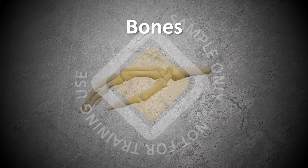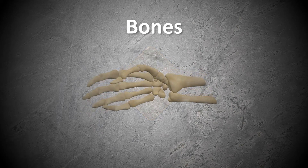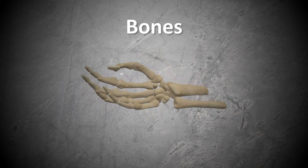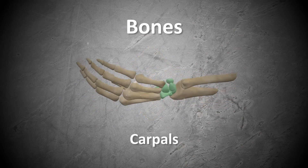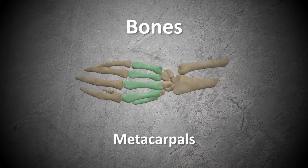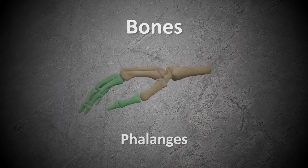There are 27 bones in the hand and wrist, which are divided into three groups – the carpals, the metacarpals, and the phalanges.